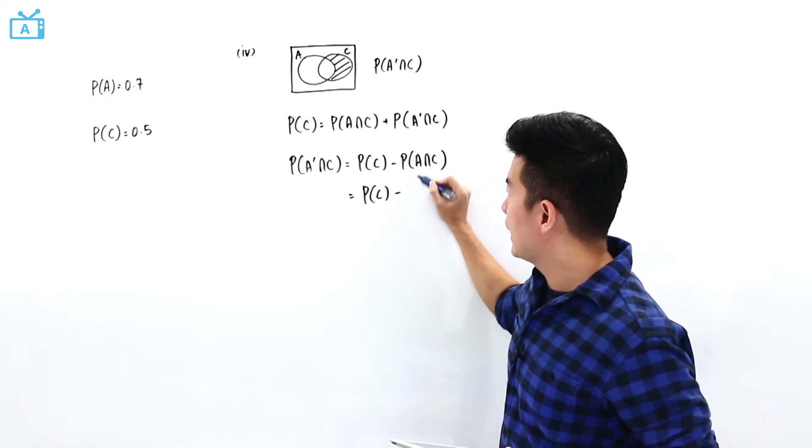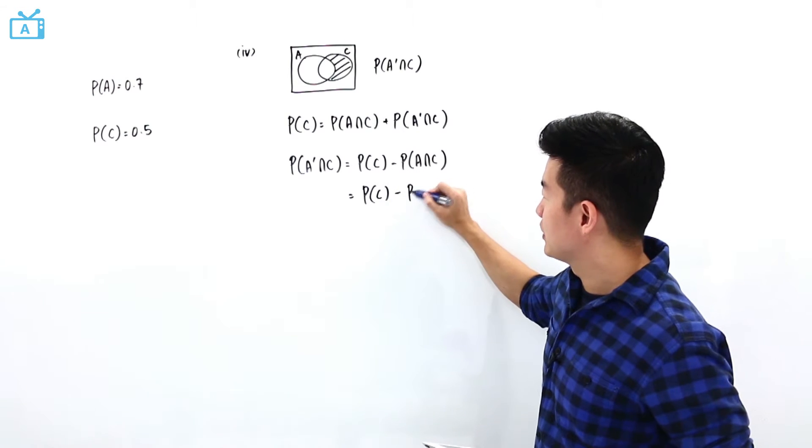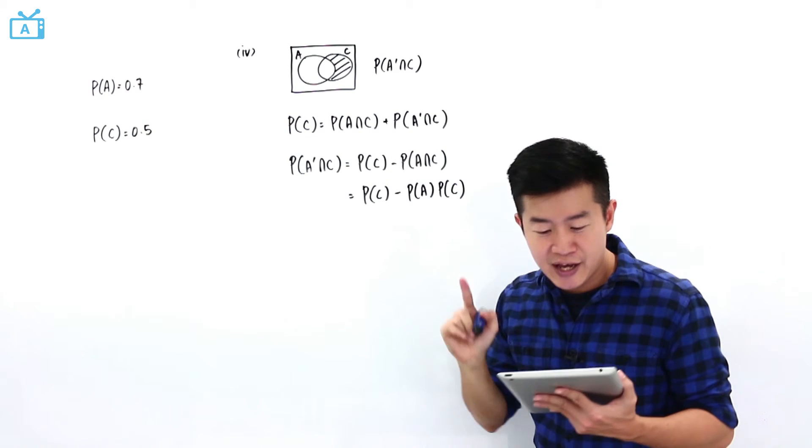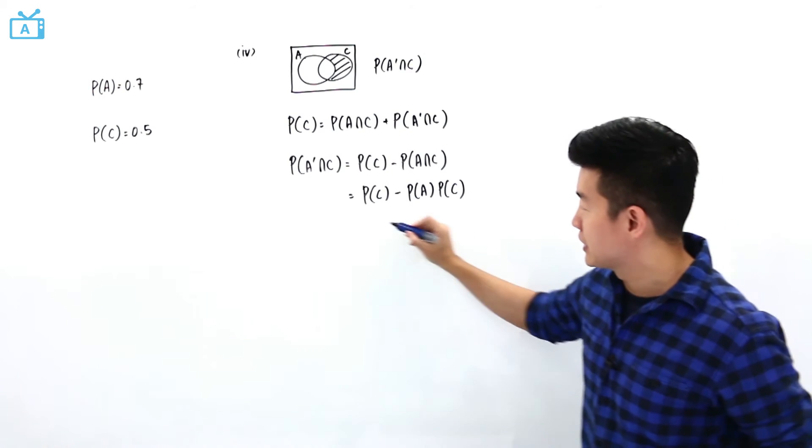And probability of A intersect C is going to be probability of A multiplied by the probability of C because the question tells us that A and C are independent.